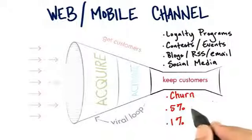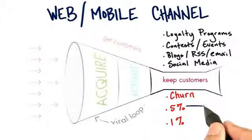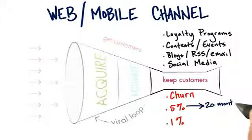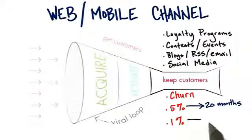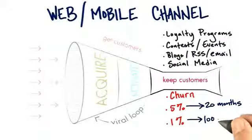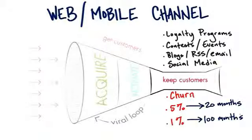Just think about it. With 5% attrition, your average customer sticks around for about 20 months. But with 1% attrition, they stick around for 100 months. You get 5 times more revenue from the same customers by just working on keeping these customers around.